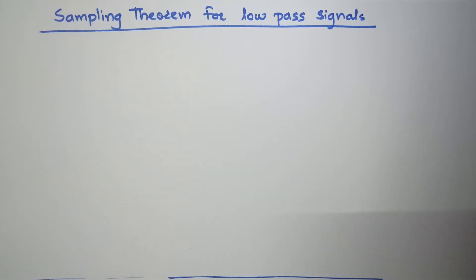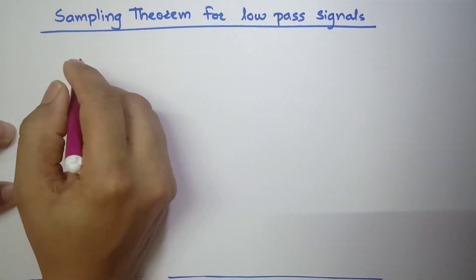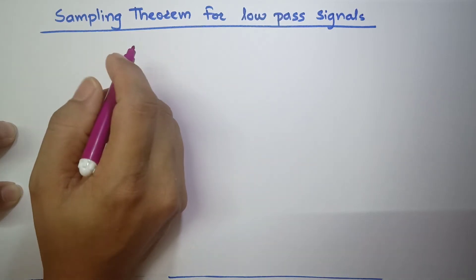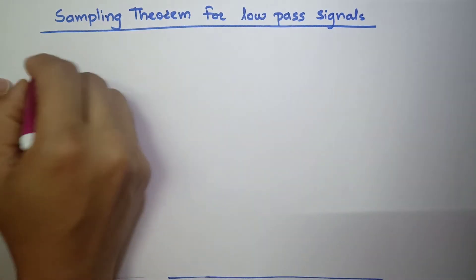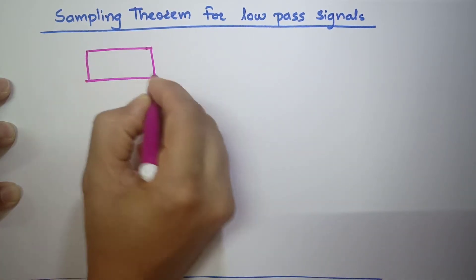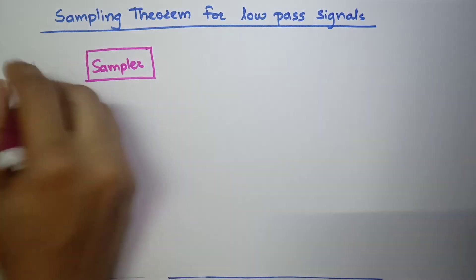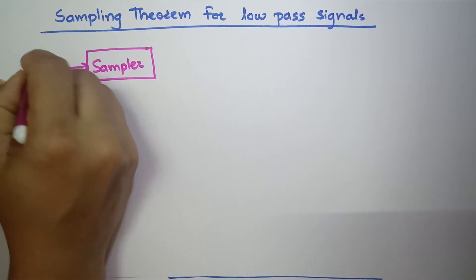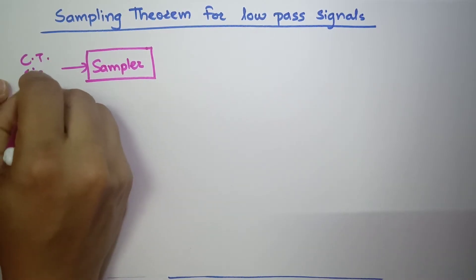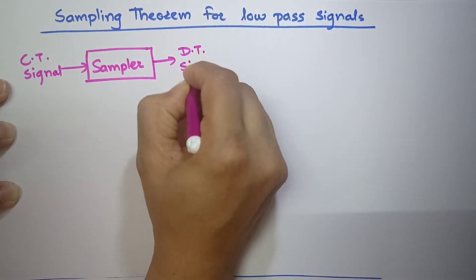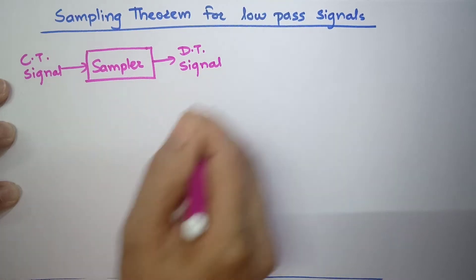Hello, today's topic is sampling theorem for low pass signals. We know that in sampling, a continuous time signal is converted to a discrete time signal. There is a sampler which converts a continuous time signal or analog signal into a discrete time signal.